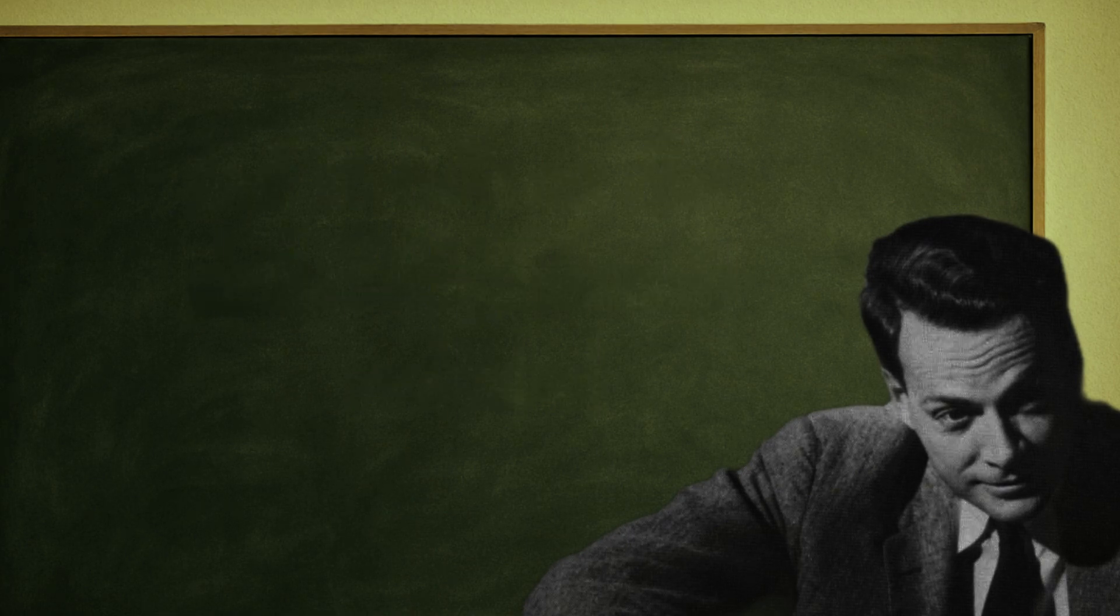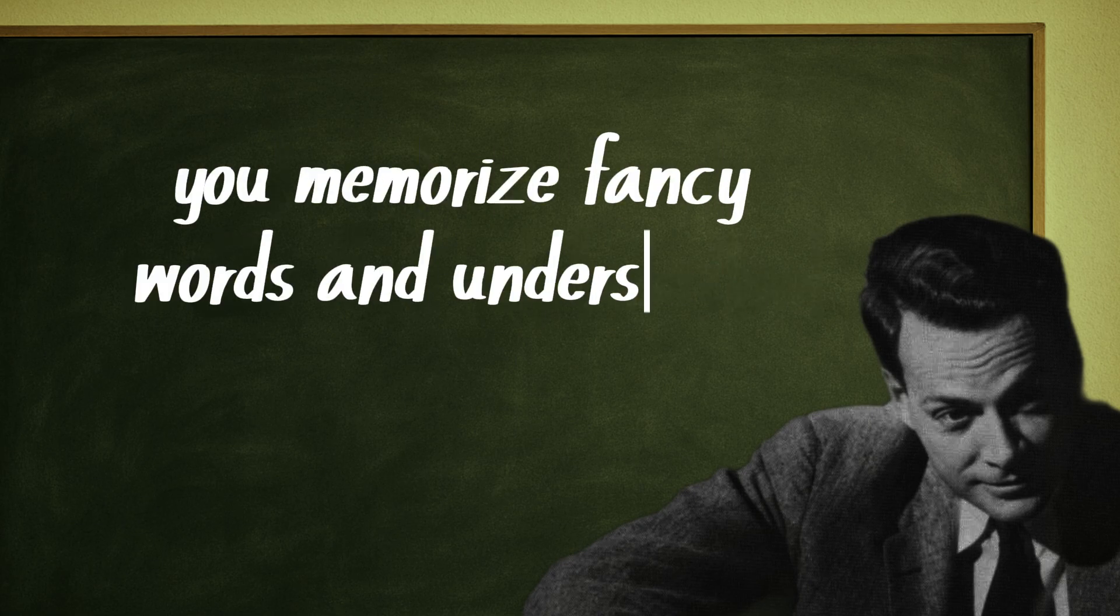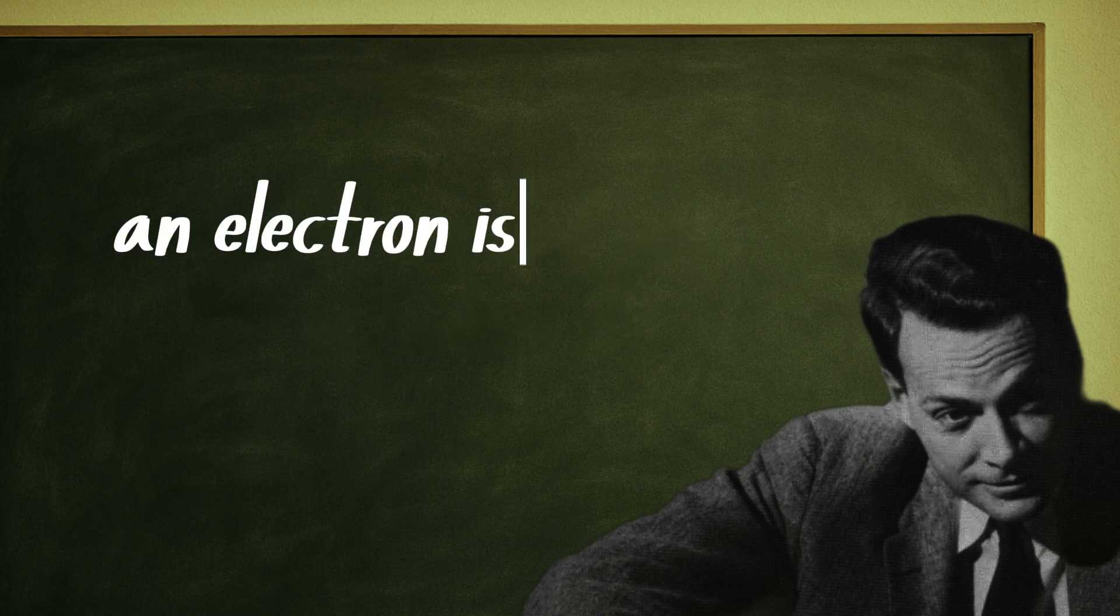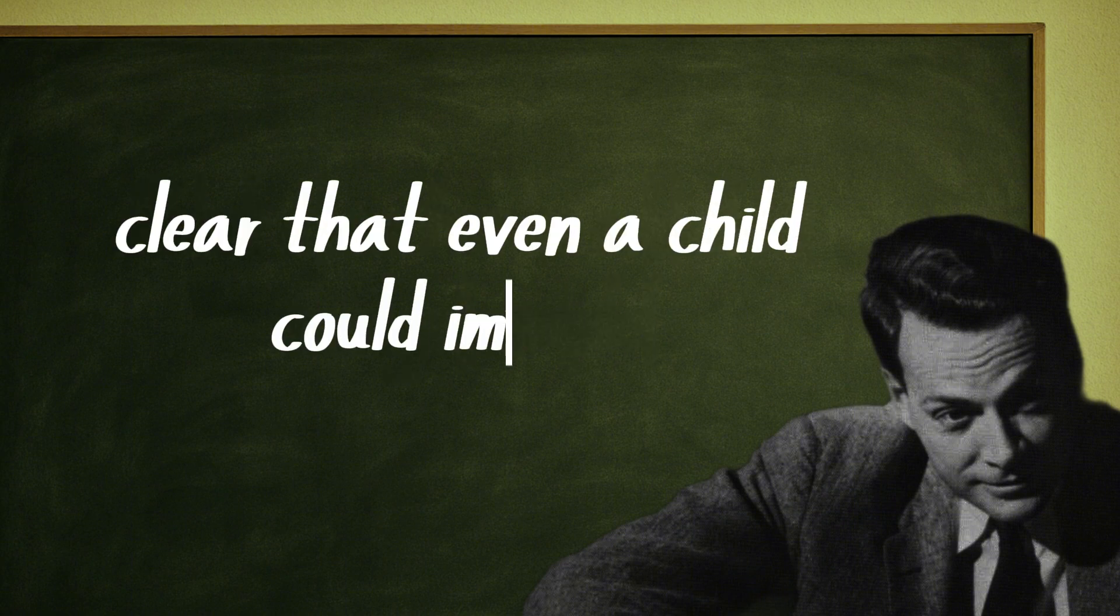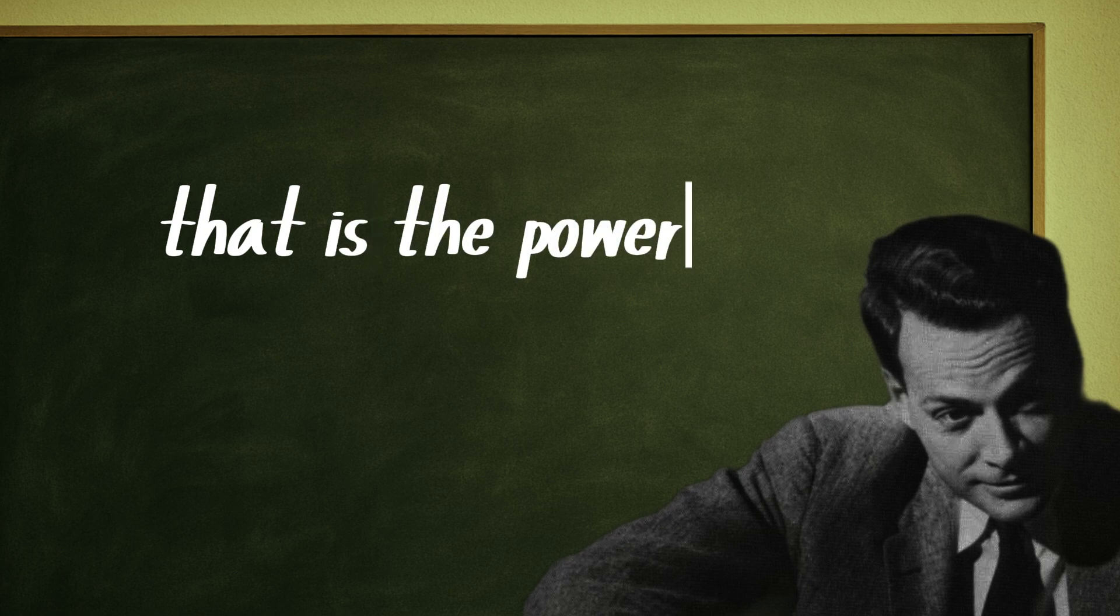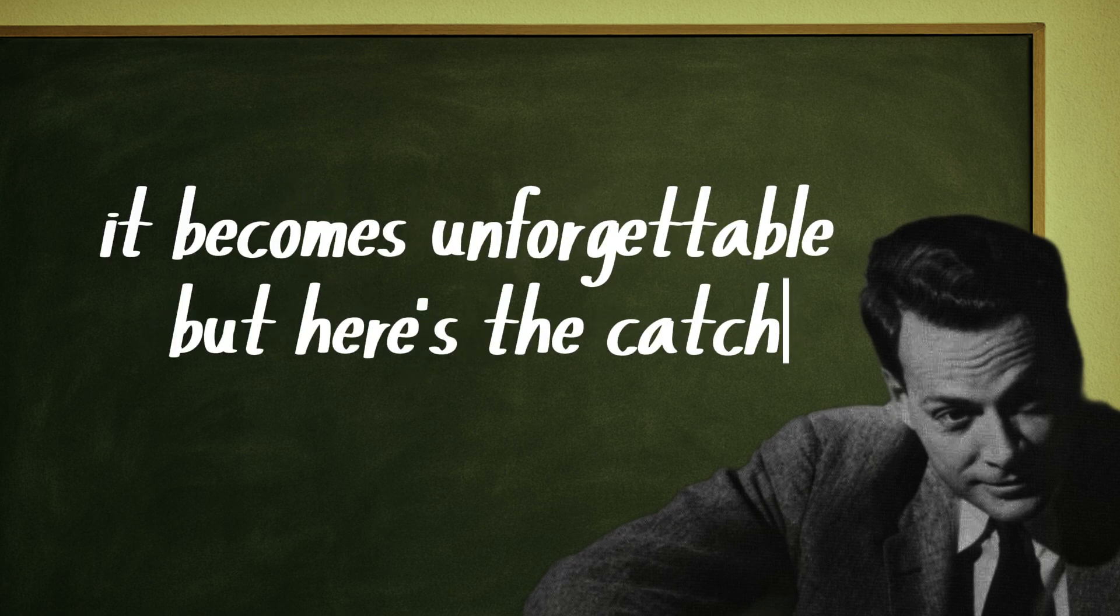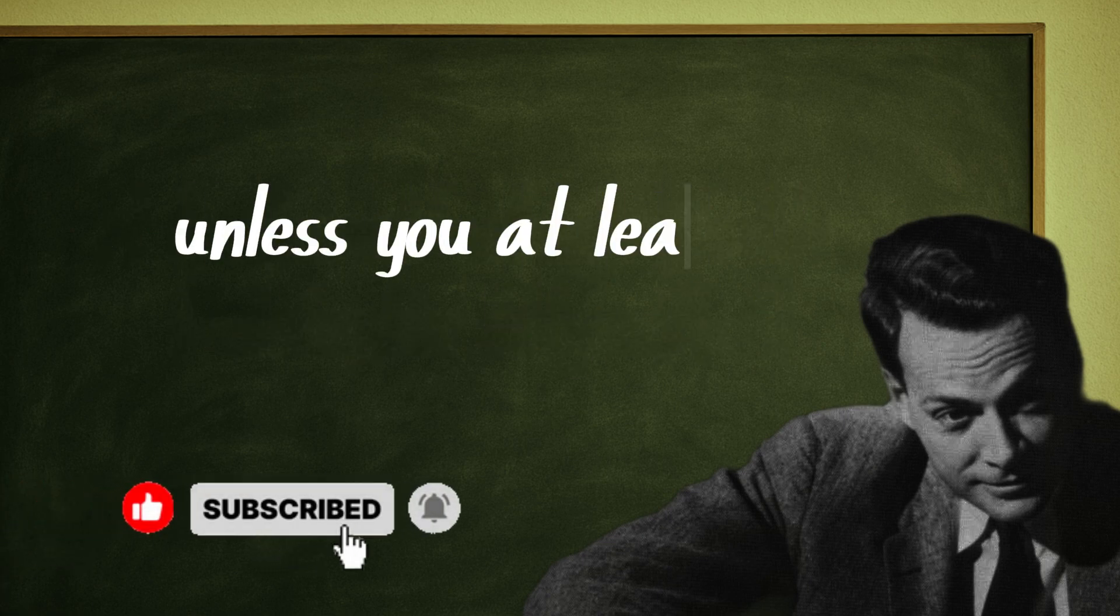See the difference? In the first explanation, you memorize fancy words and understand nothing. In the second, you visualize it. An electron is like a die spinning in the air. That creates a mental image—simple, clear—that even a child could imagine. That is the power of simplification: taking the incomprehensible and turning it into something so concrete it becomes unforgettable.